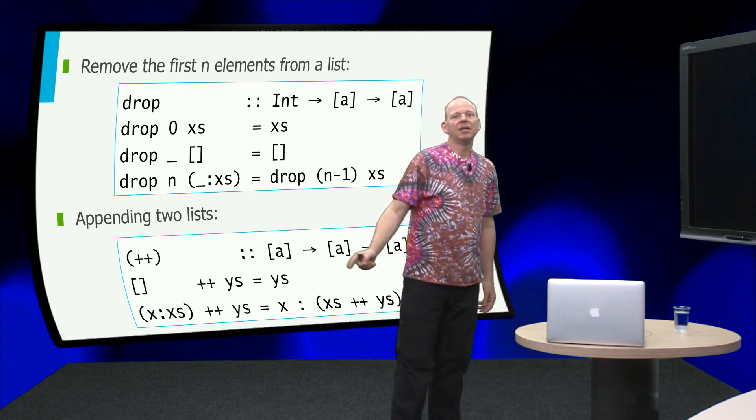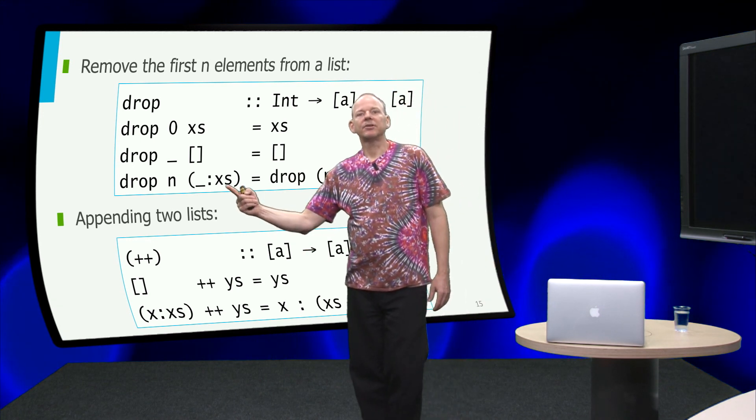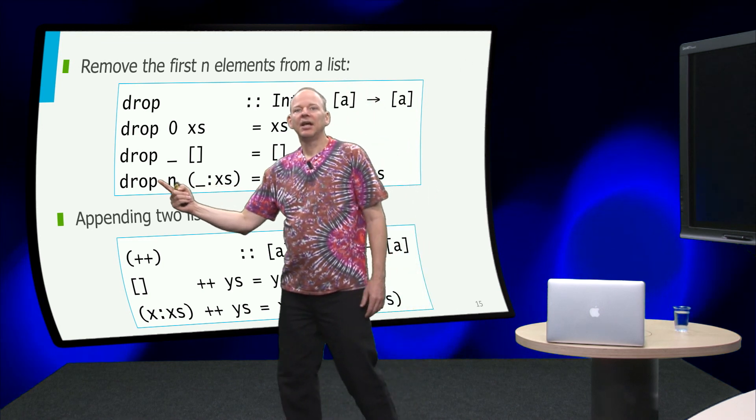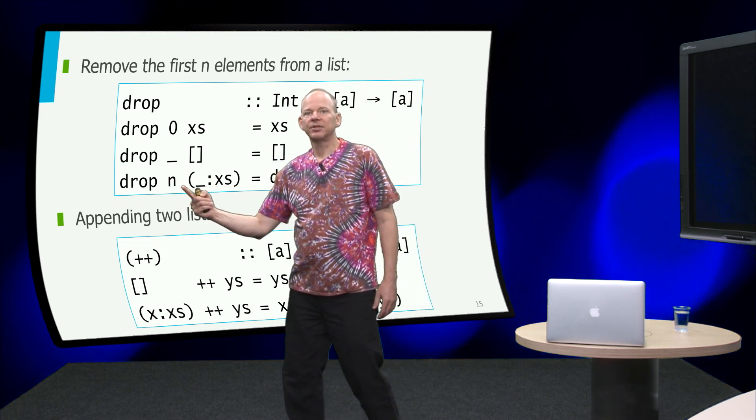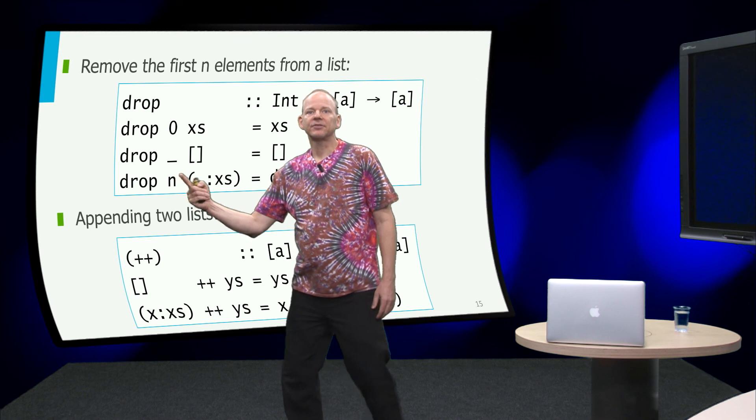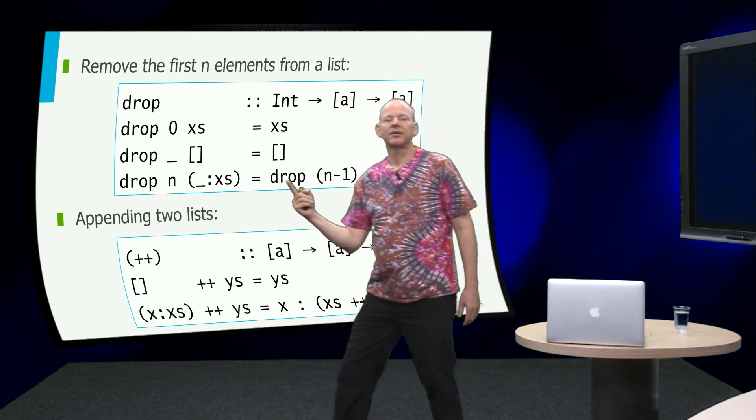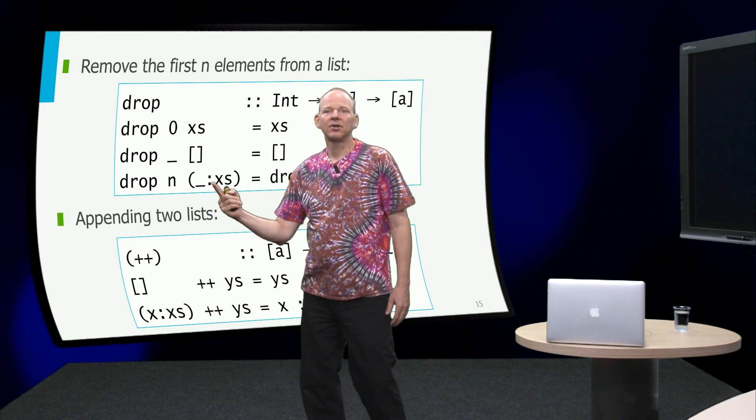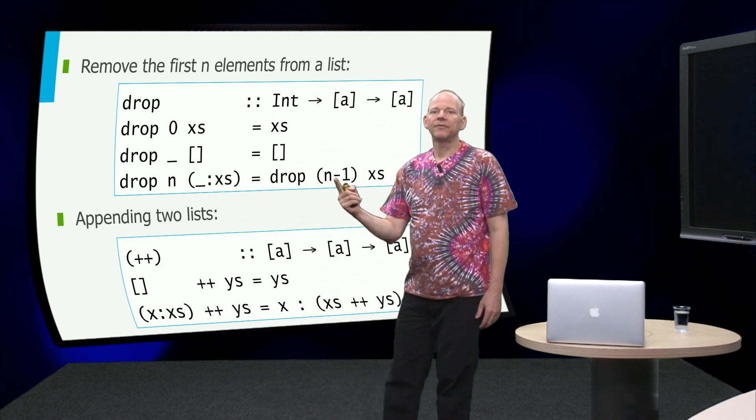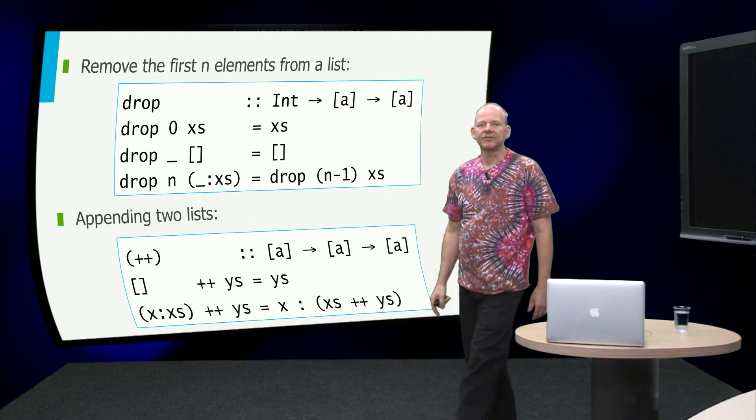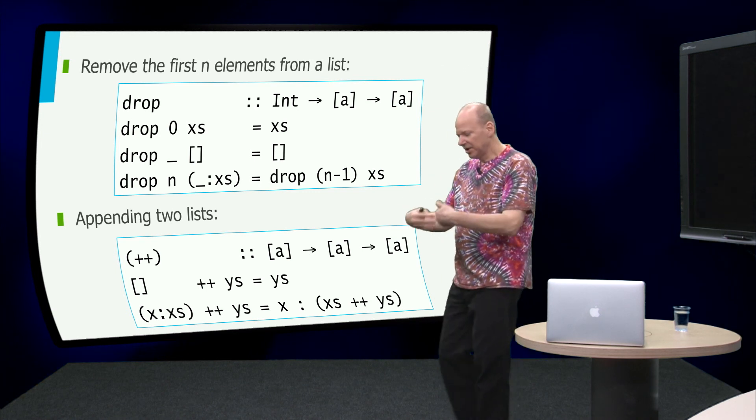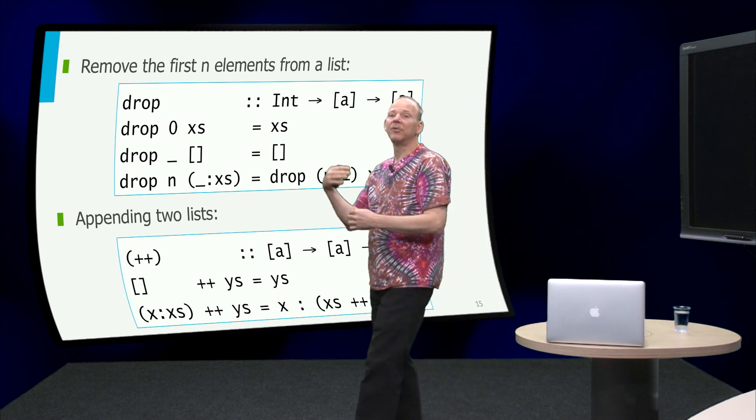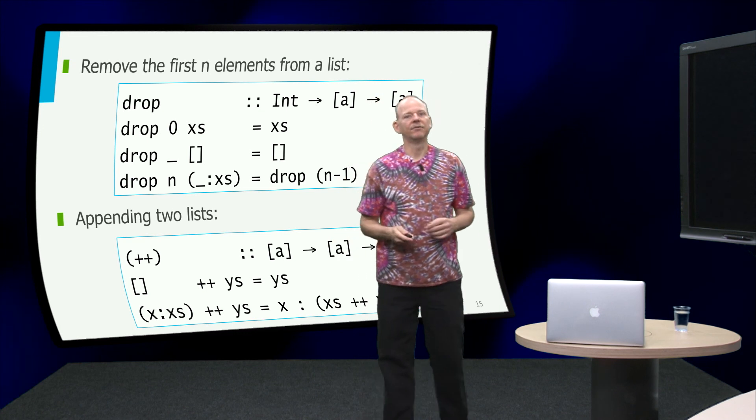And otherwise we recurse both over the list and over the number, and again since we don't have n plus k patterns we have to use n minus 1 here on the right hand side, so drop of n and whatever cons axis is drop of n minus 1 and axis. So here we recurse over the structure of the number and the structure of the list.